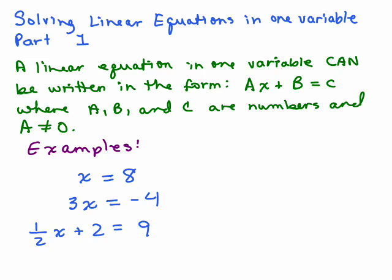So I've got three examples here. x = 8 - does that look like Ax + B = C? Well, you can make it look like that by writing it as 1x + 0 = 8, for instance. But the simplified way of writing that is x = 8. This second one could be thought of as 3x + 0 = -4. And the last one is already in the form that we're talking about.